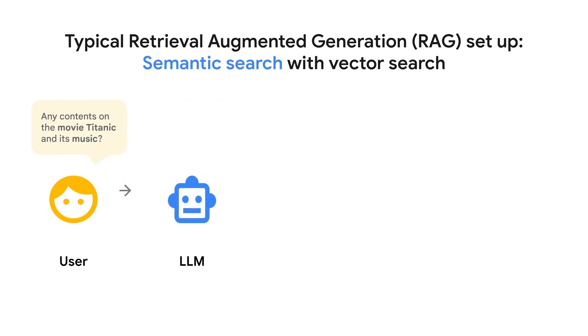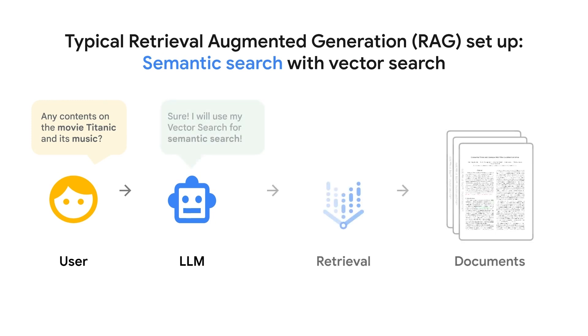Retrieval Augmented Generation, or RAG, is a popular way to build AI applications these days. It's like giving your AI a sidekick — a retrieval engine. This retrieval engine finds the relevant documents and data for user questions.